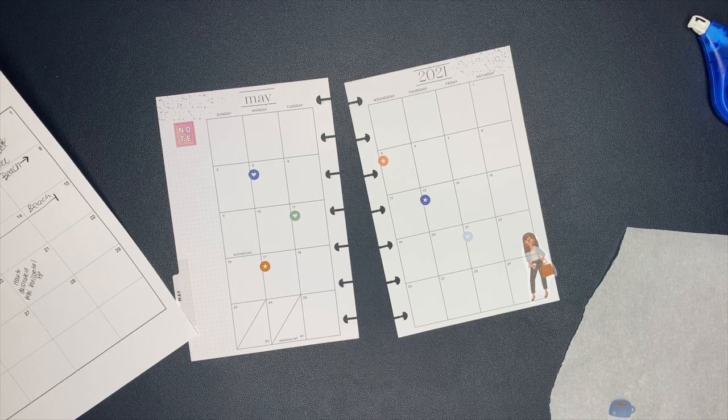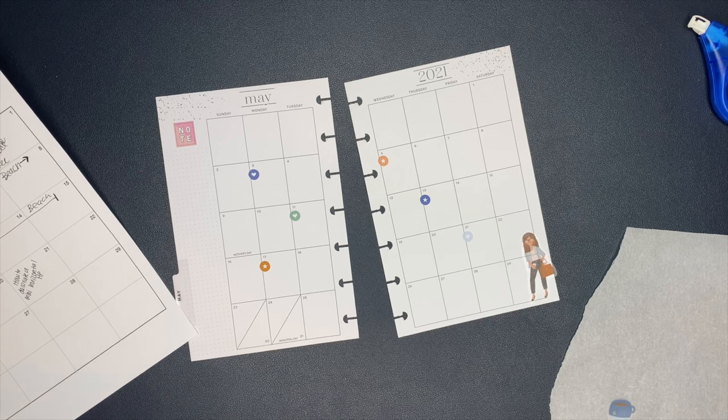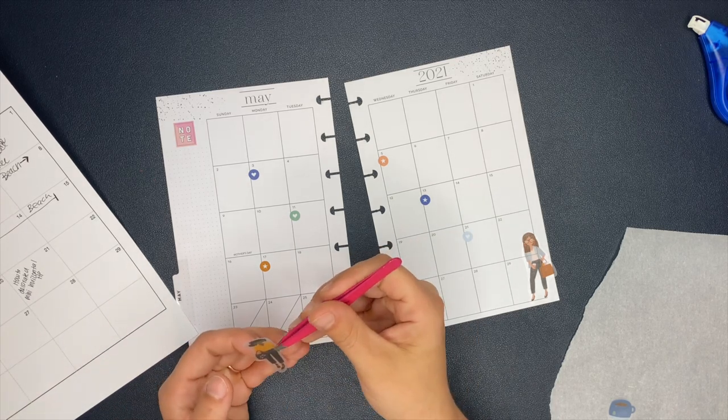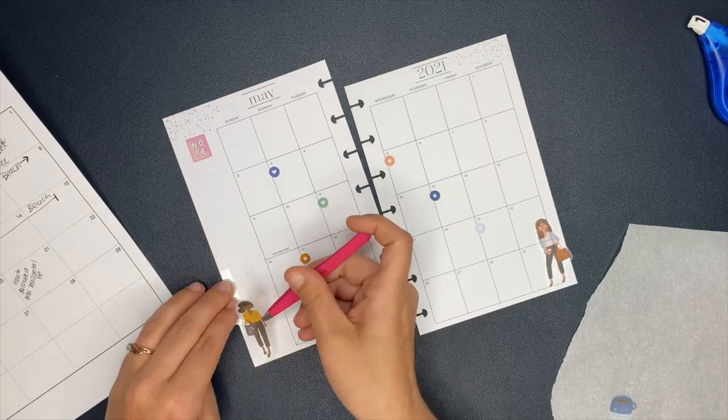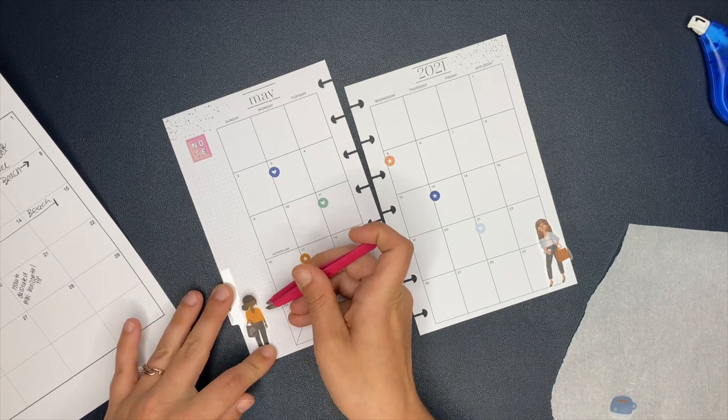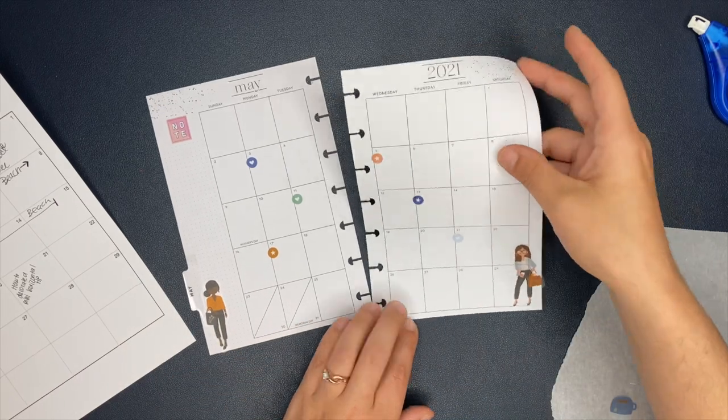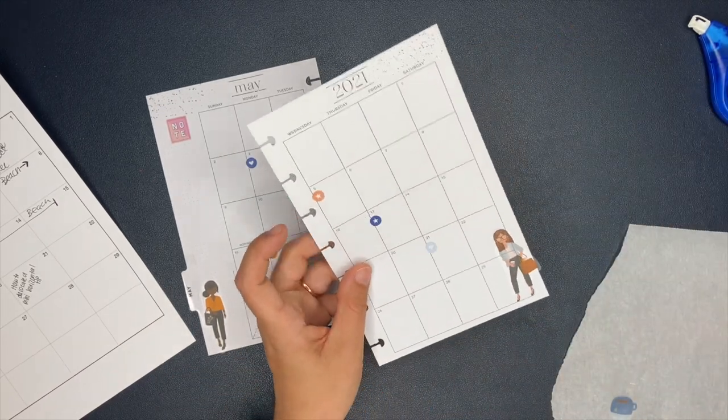You do have to get creative with some of the stickers that you use because even with a mini sticker book, sometimes, especially in the monthly section, the box stickers are still a little too big. So you just have to get creative with that, but that's the first thing that I did. And then from there, once I can see where those videos are going to go, I can start to decorate a little bit more.